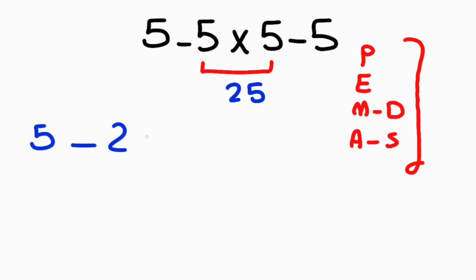5 minus 25 minus 5. Now we have two subtractions, and as we know, when we have more than one subtraction in one expression we have to solve from left to right.